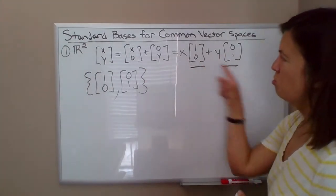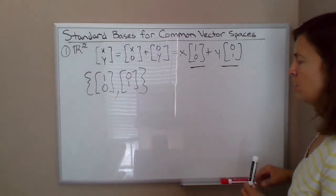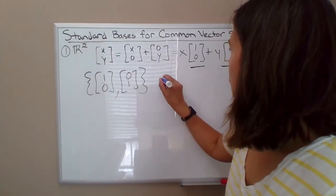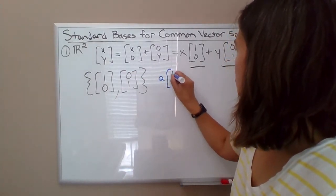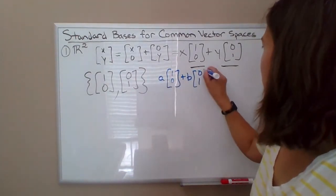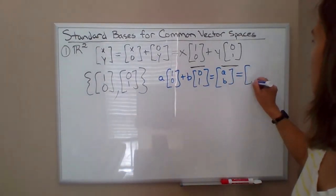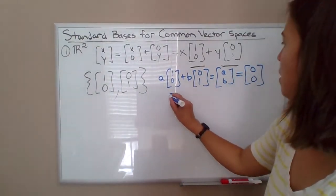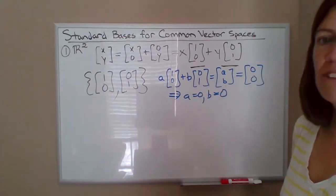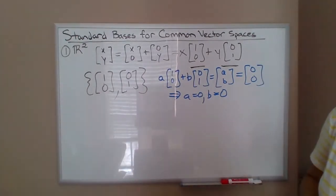Notice, so span is illustrated here. Notice that if we want to check linear independence, we would say suppose I have a scalar A times the first vector plus some scalar B times the second vector in that set. Then when I put that together, I'll have AB. If that's equal to the 0 vector, then that would imply that A has to be 0 and B has to be 0. So that equation has only the trivial solution. So these vectors are linearly independent.